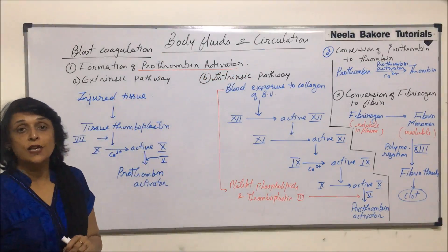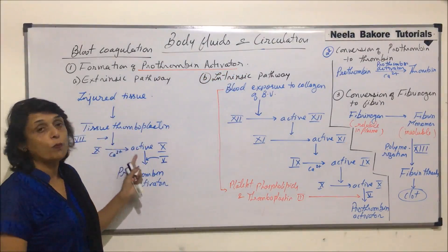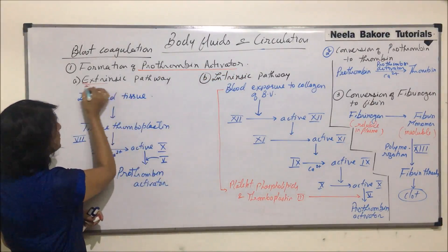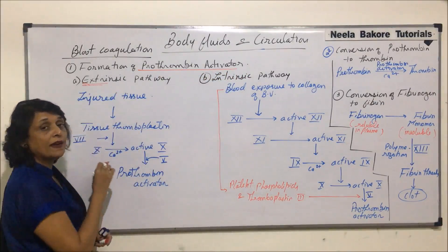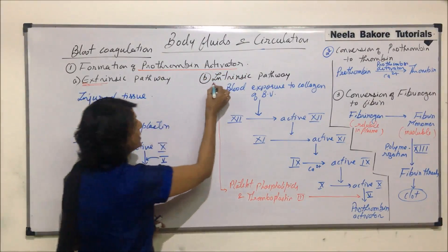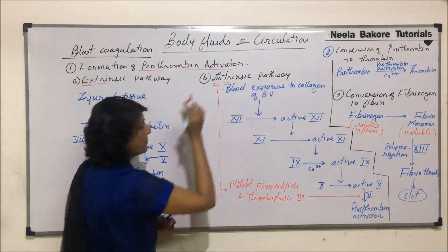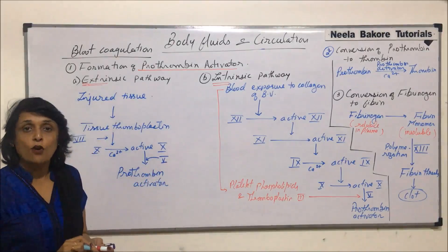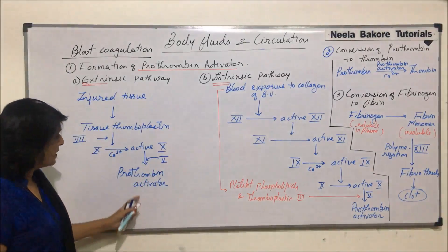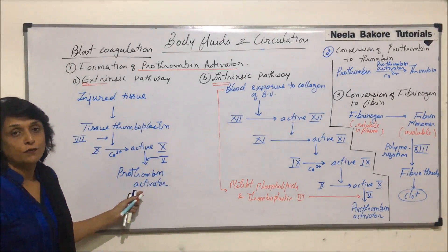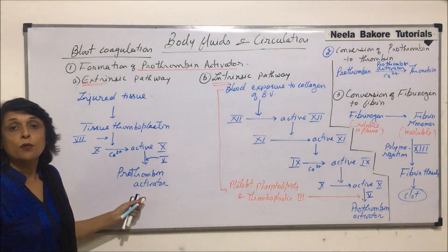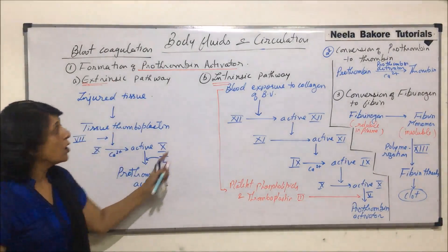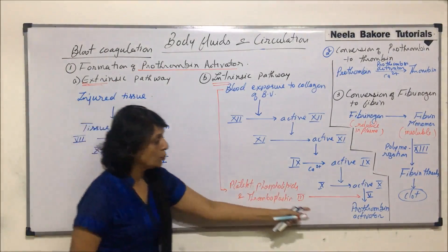The first step is the formation of prothrombin activator, and this production takes place by two pathways. One is known as the extrinsic pathway and the other is the intrinsic pathway. The end result of both pathways is formation of the same prothrombin activator, whether it is through the extrinsic or intrinsic pathway.